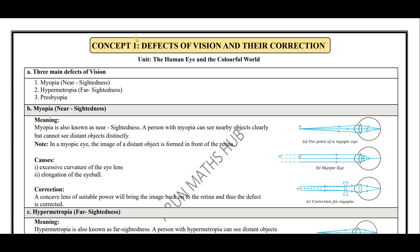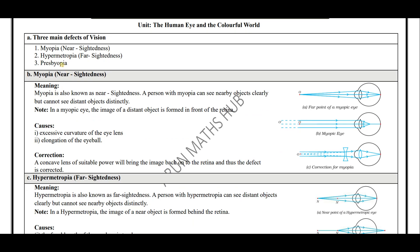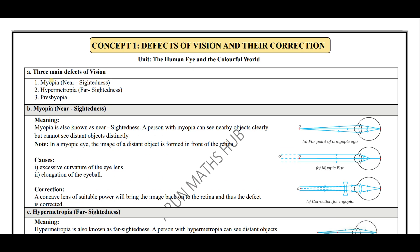The human eye and the colourful world. There are 3 main defects of vision: one is myopia, second is hypermetropia, and presbyopia.